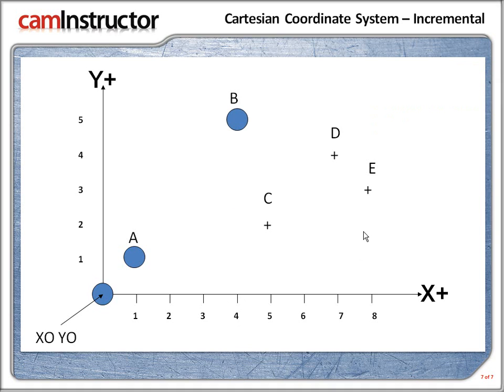Now from B to C what's the incremental distance in X and Y from B to C? We are moving one unit in the X and that's a positive value and from B to C we are moving down in the Y direction so it's a negative direction. So from B to C X is 1 and the Y is negative 3.